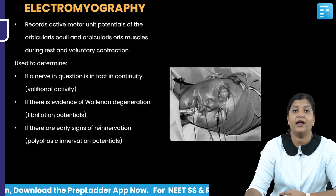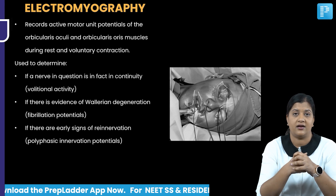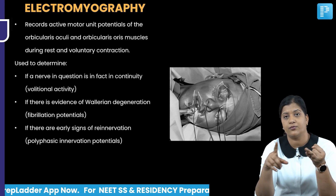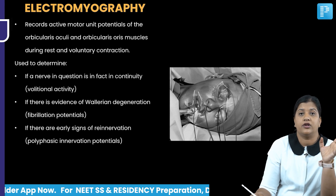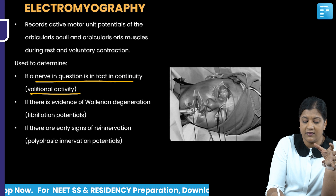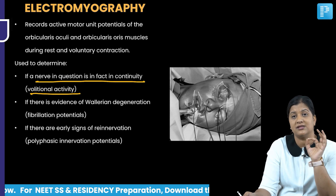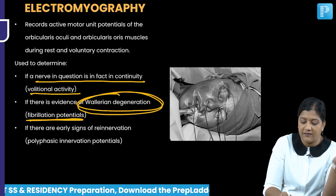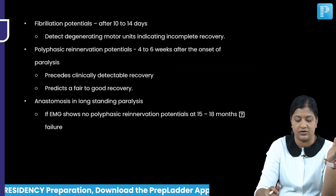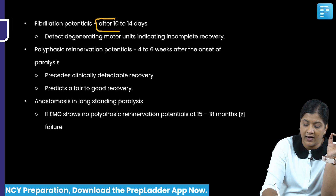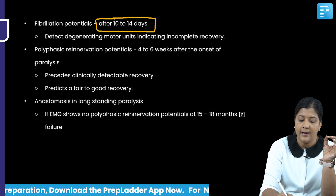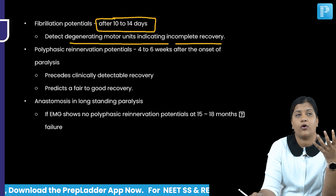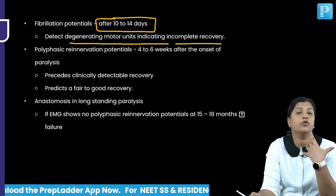Electromyography (EMG) records potentials generated at the muscle level. Volitional activity indicates the nerve is in continuity. Fibrillation potentials indicate Wallerian degeneration. If fibrillation potentials appear after 10 to 14 days of facial nerve palsy, it means degenerating motor units and indicates incomplete recovery, prompting a shift from medical therapy to surgical intervention.